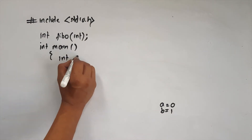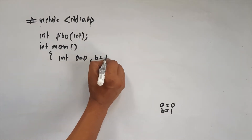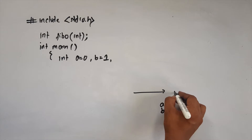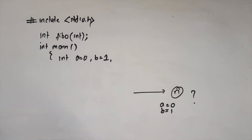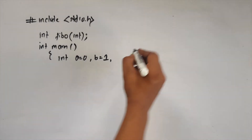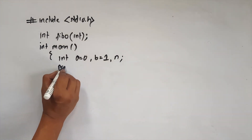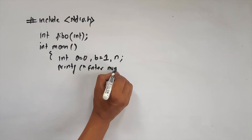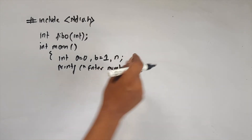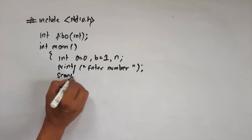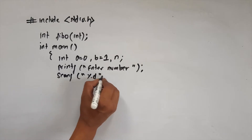For the Fibonacci series, a is equal to 0 and b is equal to 1. These are the initial values. Then we get the user's number n — how many terms do we need? 10 terms, 12 terms, 20 terms — how many terms does the user want? We use scanf to read the address of n.